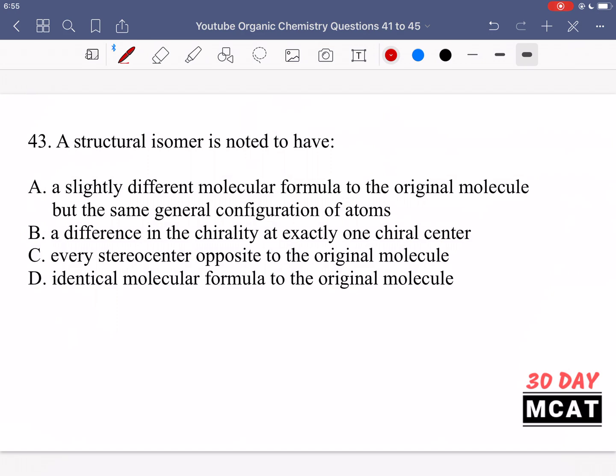Moving on to question 43. A structural isomer is noted to have what? We're talking about structural isomers, and the definition is that they have the same chemical formula except the ways in which the atoms are attached might be different. For example, we can have propanol with the OH group at carbon one or at the middle carbon. For these two molecules, the molecular formula is the same, but the way in which the atoms are attached might be rearranged. These are structural isomers.